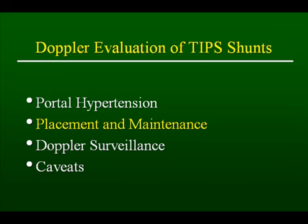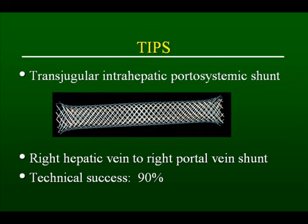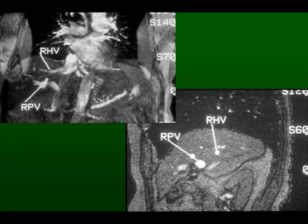Placement and maintenance of TIPS shunts. TIPS stands for transjugular intrahepatic portal systemic shunt. These shunts are placed typically through the jugular vein into the right hepatic vein, and a conduit is established between the portal system and the right hepatic vein. Typically, the shunt extends from the right hepatic vein to the right portal vein, and the technical success of this procedure is now greater than 90%. Here is an MR study showing the connection between the right portal vein and the right hepatic vein — a relatively small amount of liver tissue is actually traversed.